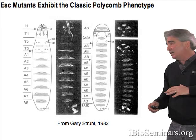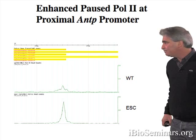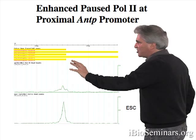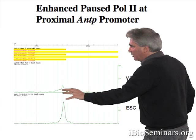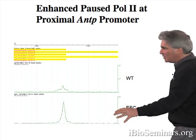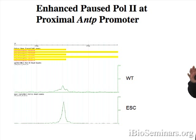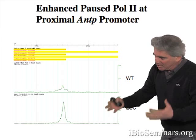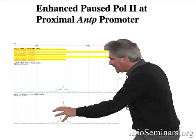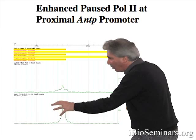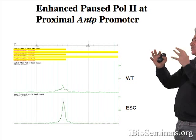An example is shown here — this is the Antennapedia gene itself, at the proximal-most promoter. In wild-type embryos, you see a little bit of polymerase binding at the promoter — a little bit of pause polymerase. But in the ESC mutants, you see a significant increase in the amount of pause polymerase at the promoter. This was surprising to us, because in ESC mutants, ABD-B is transcribed everywhere and Antennapedia is shut off. So you see more polymerase binding in the ESC mutant at the Antennapedia promoter, even though the gene is off. This trend of increased pause polymerase in ESC mutants is seen for a couple of thousand genes.